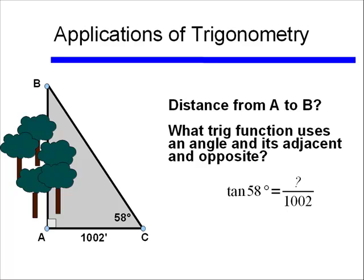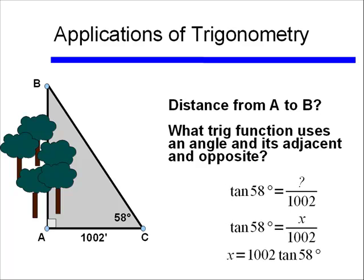So we know that we have the tangent of 58 degrees, and that's equal to, well we're not sure what our opposite side is, but our adjacent side is 1002. And I don't like using question marks, let's use X, let's have that be our unknown. If I cross multiply, I find that value of X is equal to 1002 times tangent of 58 degrees.